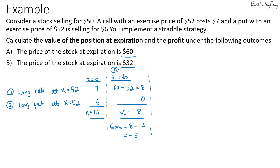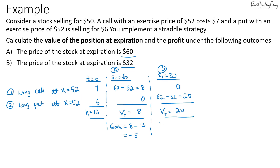If the price is $32 under Scenario B, the long call would be out of the money but the long put would be in the money. If you exercise the put, the payoff would be $52 minus $32, giving us $20. So the value of the straddle strategy is $20, and the gain is $20 minus $13, which is $7.